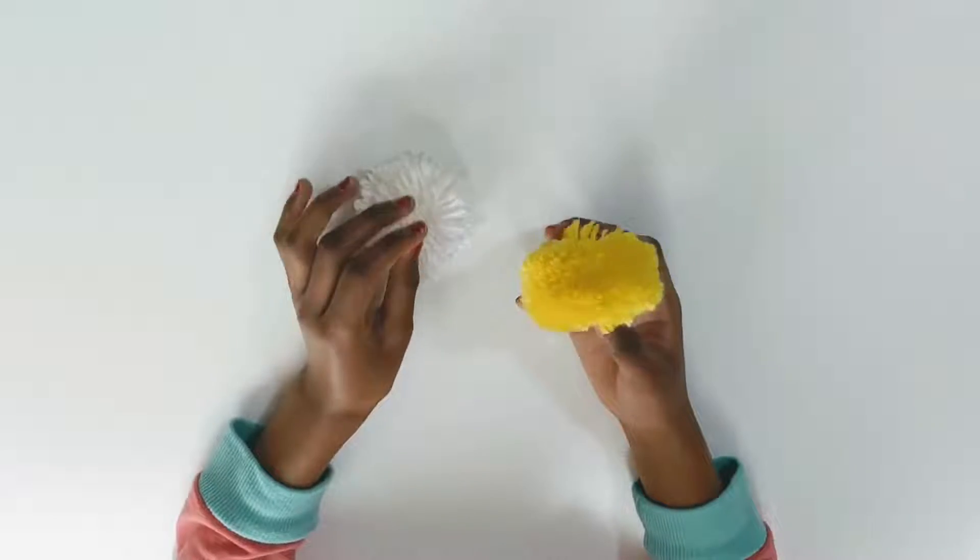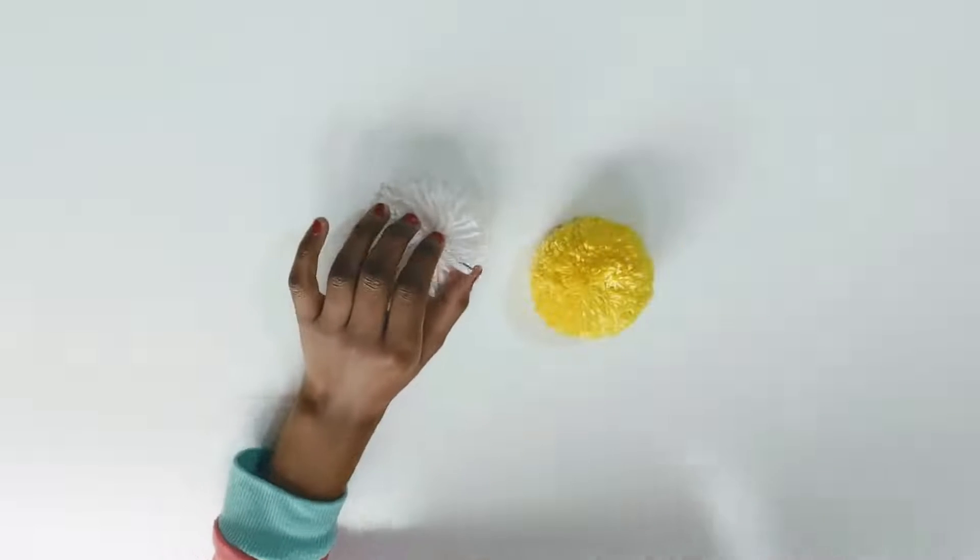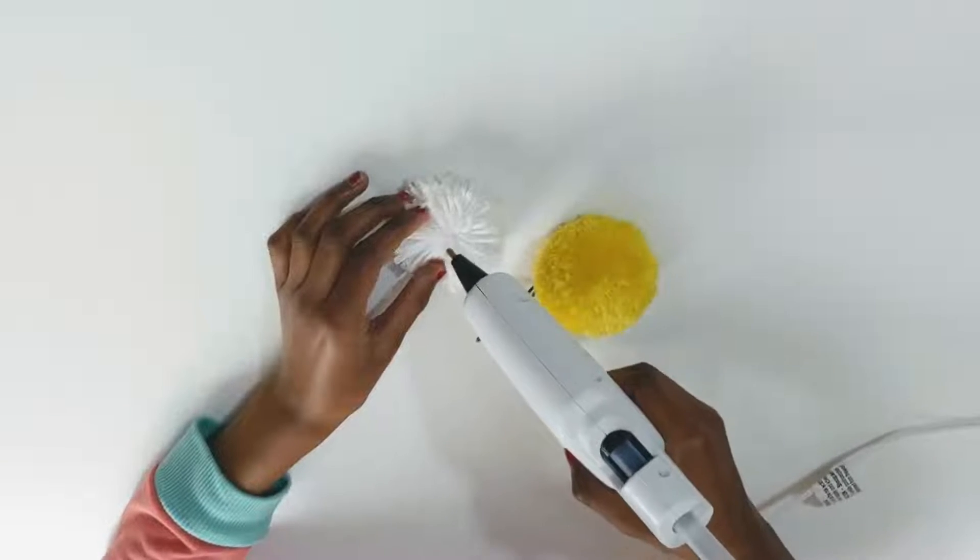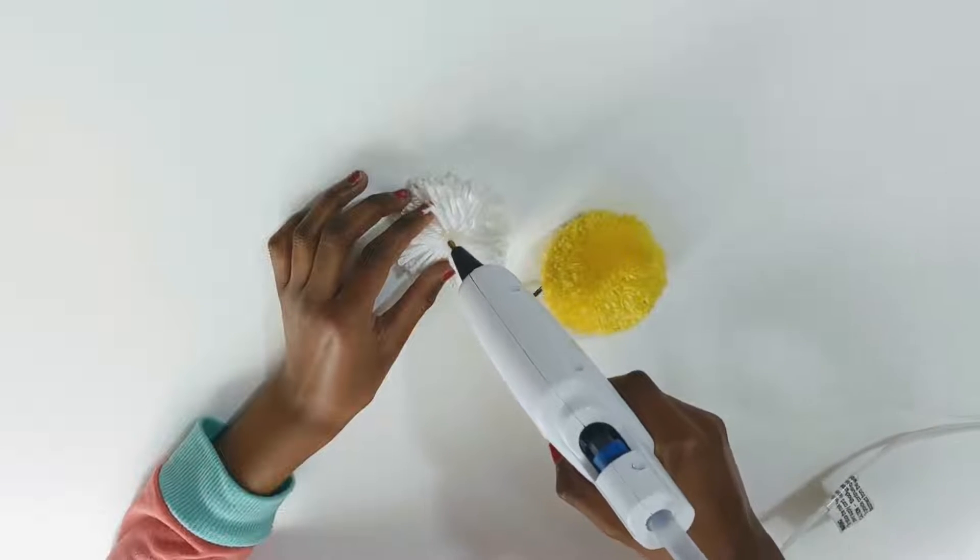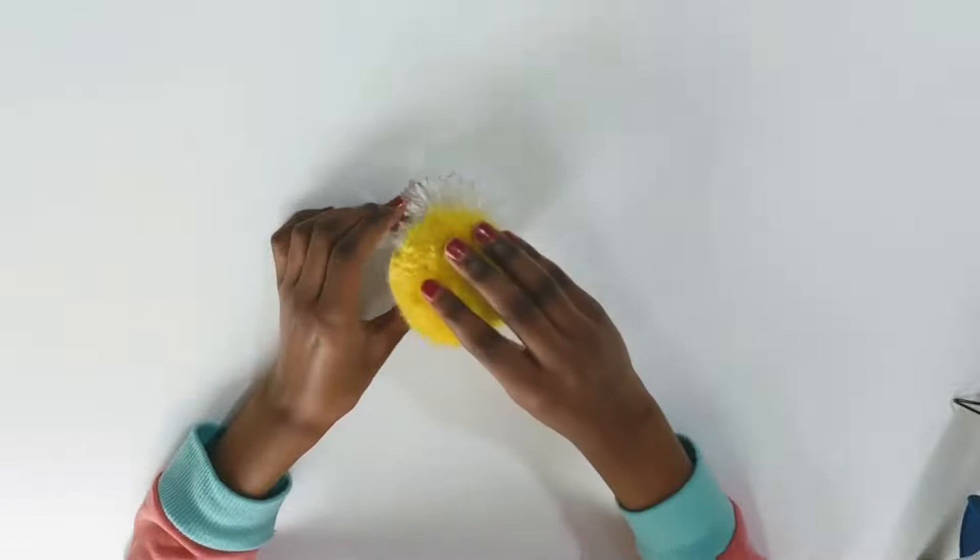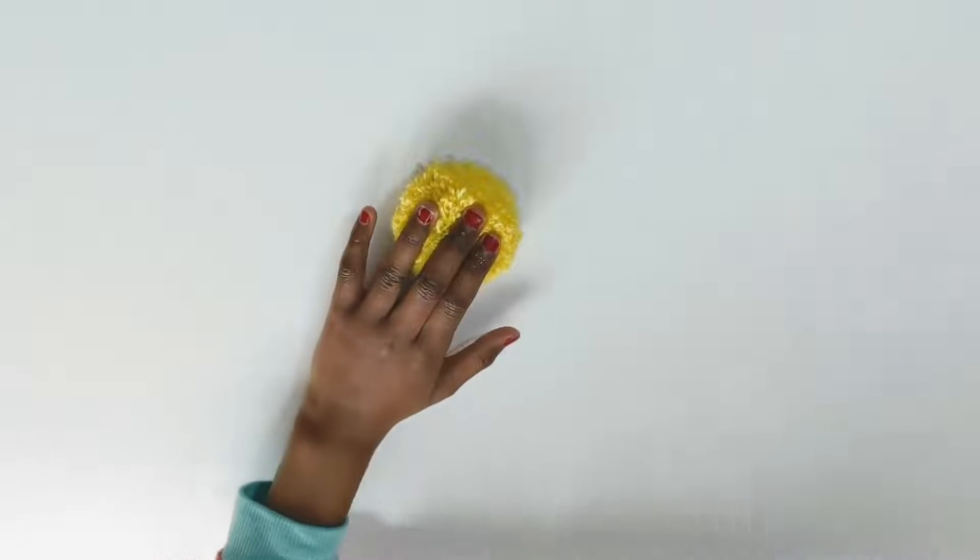I made this one with 200 loops and this one with 100 loops. We're going to put them together. Put just enough hot glue in the middle of the bottom one, white, for the yellow one to stick on. Put it on quickly before it dries. You can press it together.